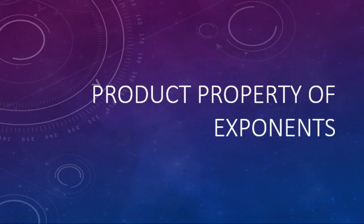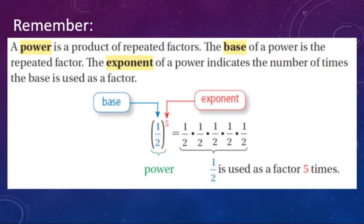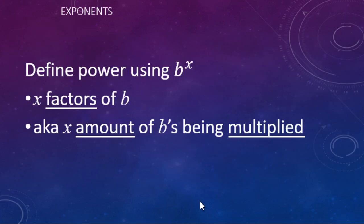We are going to be looking at the product property of exponents. Quick review on what exponents or powers are: a power has an exponent — in this case it's a five — and the base is one-half. So this is saying you have five one-halves being multiplied, or five factors of one-half. Looking at b to the x power, we have x factors of b, or x number of b's all being multiplied.